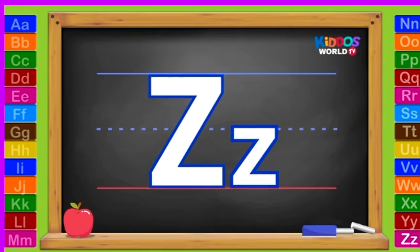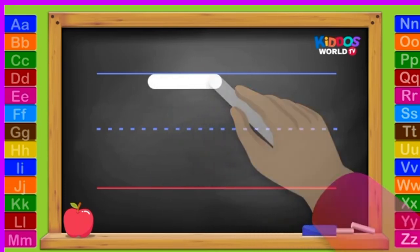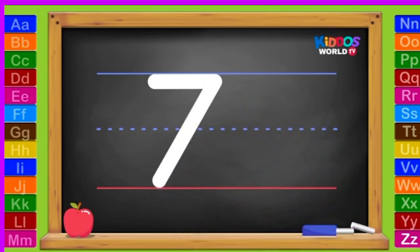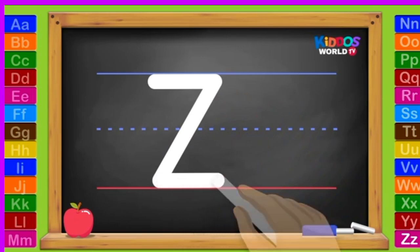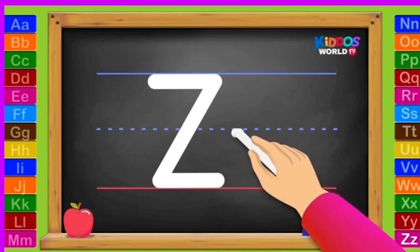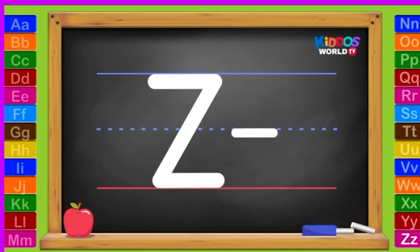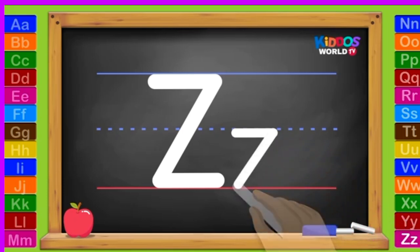The letter Z. Uppercase Z. Across on top, slant down in, and across at the bottom. Lowercase Z. Start on top, across, slant down in, across again.